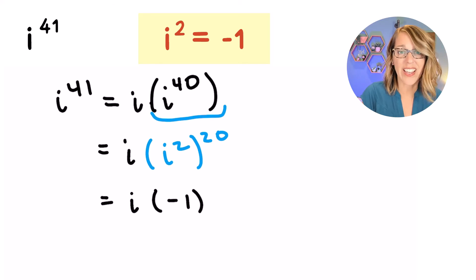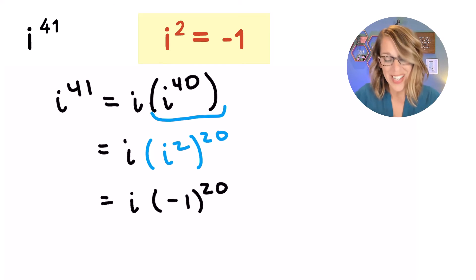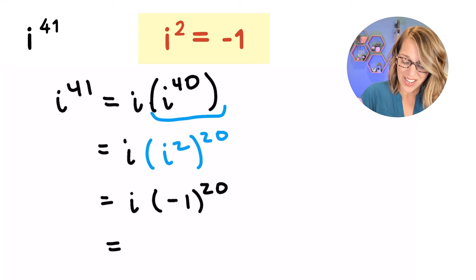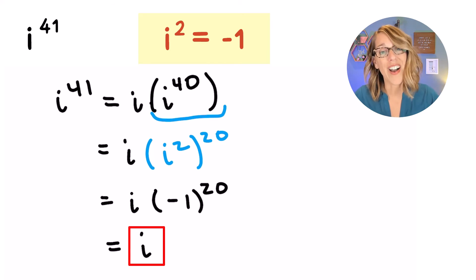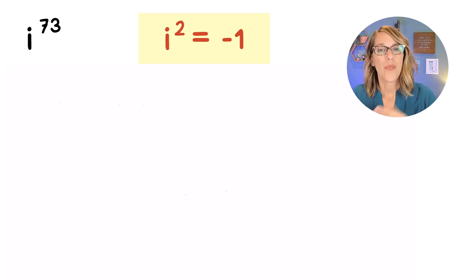i squared is negative 1, and negative 1 to the 20th power is positive. So I end up with positive i there. Why don't you pause this one and work it through, and then rejoin me.